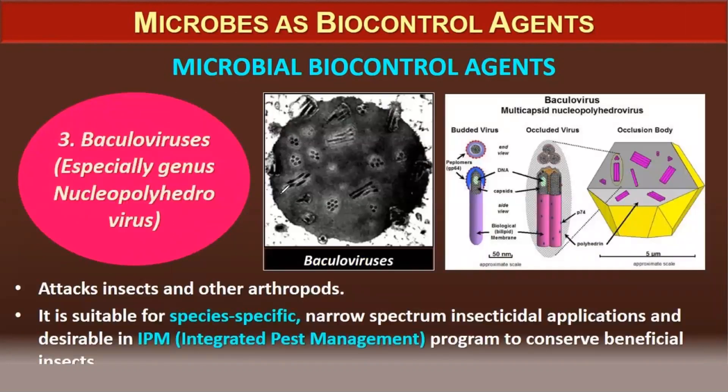A third example is Baculovirus, specifically the genus Nucleopolyhedrovirus, which attacks insects and other arthropods. When a plant gets attacked by insects or arthropods, these viruses prevent the infection. Baculoviruses are species-specific, making them suitable for narrow-spectrum insecticidal applications and desirable in Integrated Pest Management (IPM) programs to conserve beneficial insects.